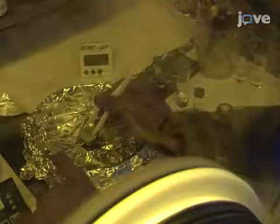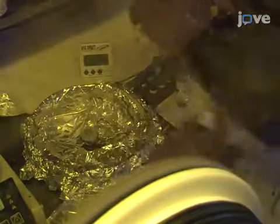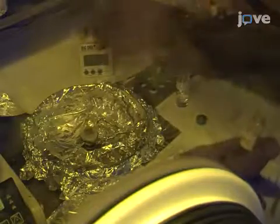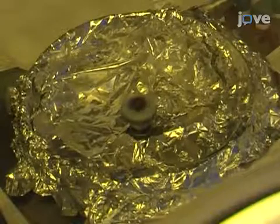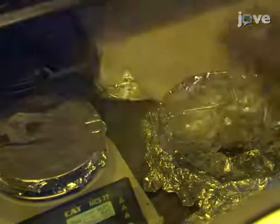Next, dissolve 40 milligrams of methyl ammonium iodide in 5 milliliters of isopropanol. Place the lead iodide-coated substrate in a spin coater and apply 120 microliters of the MAI solution. Allow the solution to sit on the substrate for 45 seconds and then spin coat the substrate with MAI for 20 seconds at 4,000 RPM. Anneal the perovskite film at 100 degrees Celsius for 45 minutes.